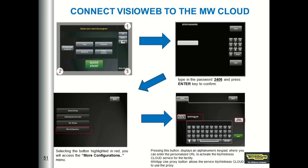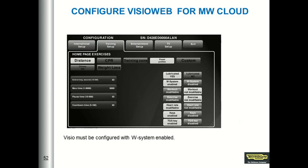To insert the facility URL in VisioWeb, this is also very similar to VisioSelf. You must touch the three corners in the sequence displayed in this slide, enter the password 2406, select 'More Configuration,' and write the facility URL. Note that when you have VisioWeb connected to MyWellnessCloud, the button WSystem must always be enabled.